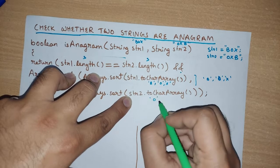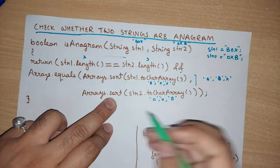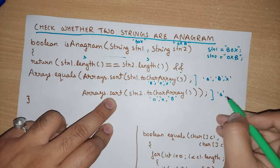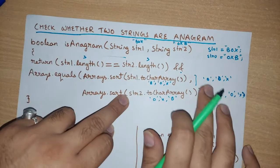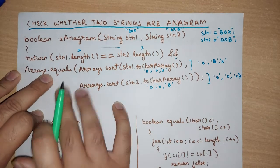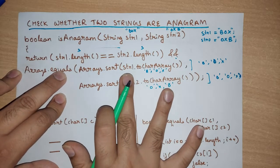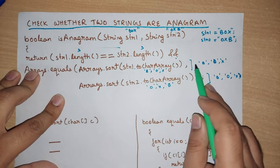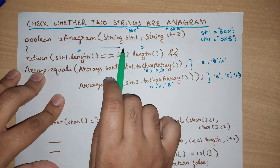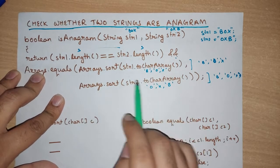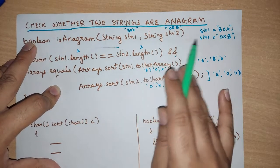For the second string 'oxb', calling toCharArray() gives ['o', 'x', 'b']. When passed to Arrays.sort(), it becomes ['b', 'o', 'x']. Both sorted arrays are then passed to Arrays.equals(), which is also a utility function that takes two parameters and checks whether the arrays are equal. Both sorted arrays are 'box', so Arrays.equals() returns true. Since both the length check and the array comparison are true, the method returns true, identifying these strings as anagrams.